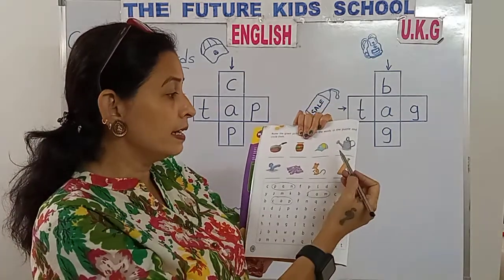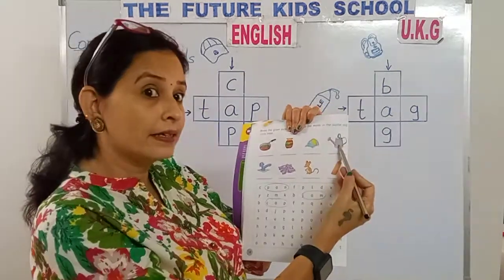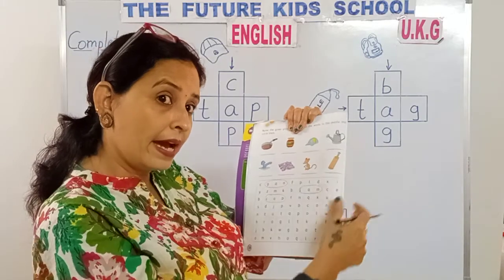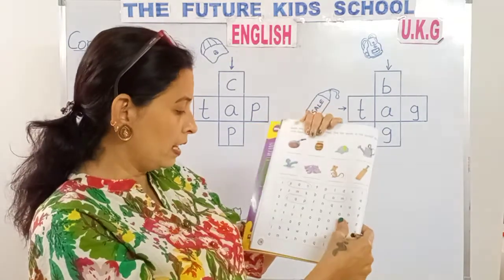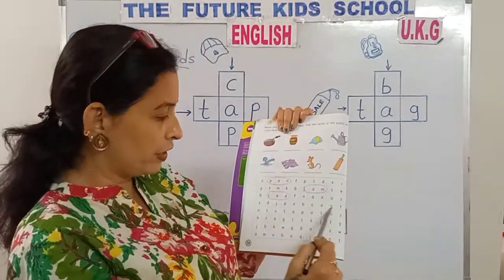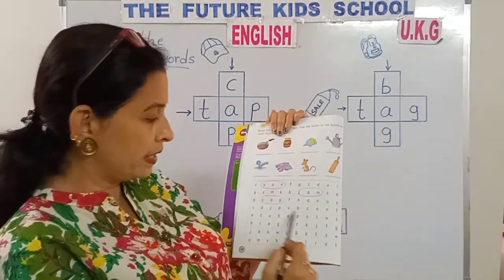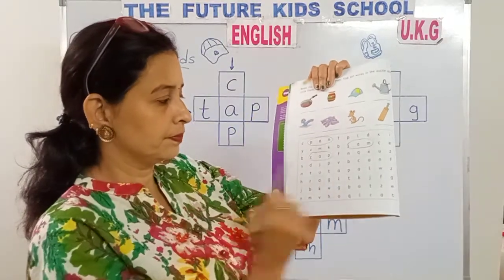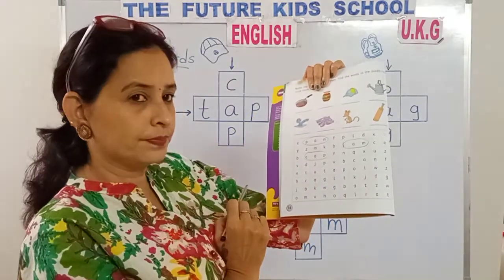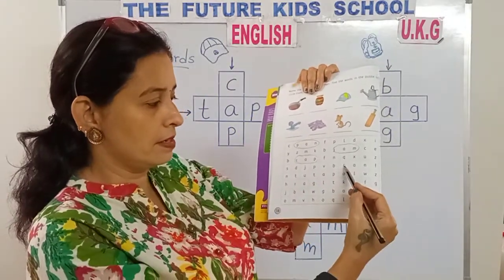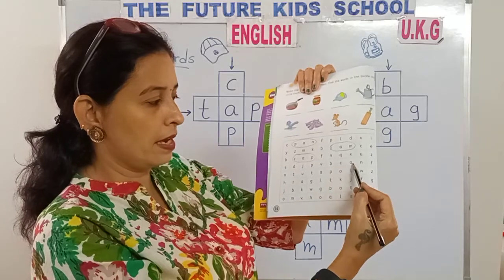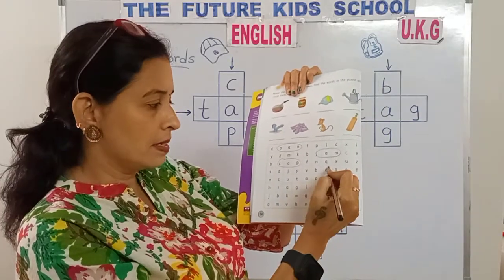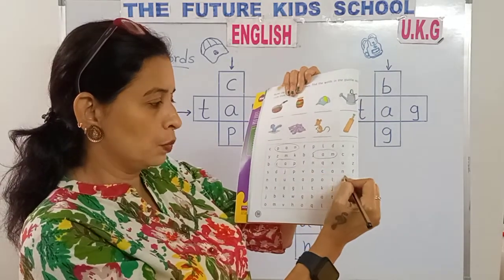This is a can. C-A-N. Can. Look in this line, children, if you can find the word can. Yes, here it is. C-A-N. Can. Circle the word.